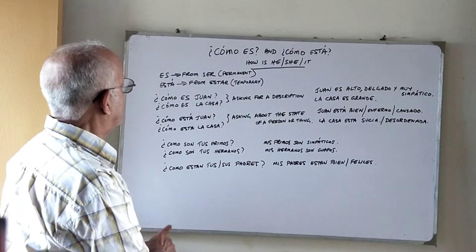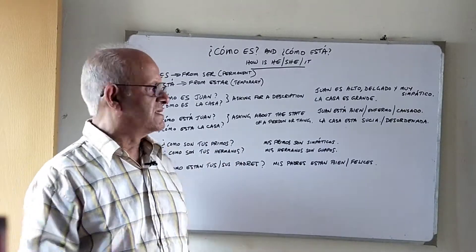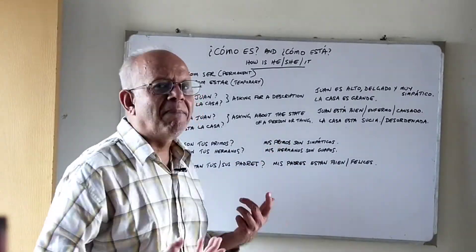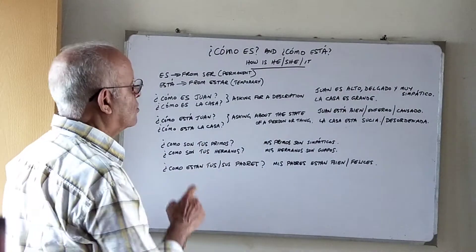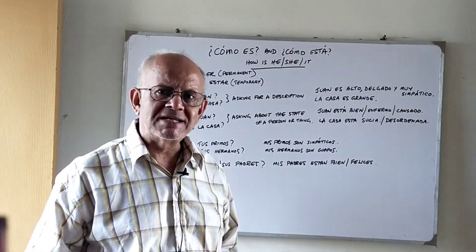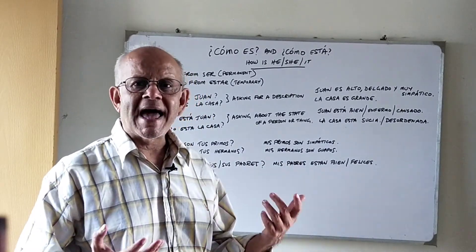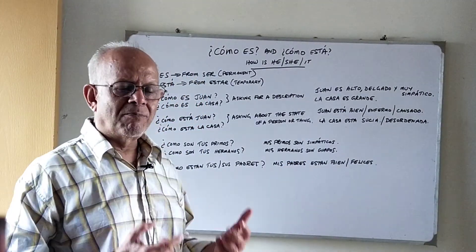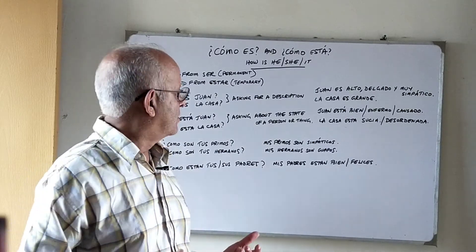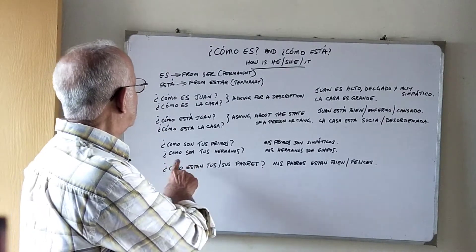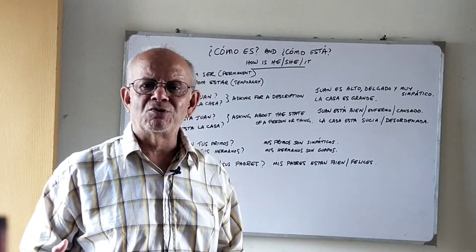Now some more examples in the plural. Cómo son tus primos? — What are your cousins like? The answer could be: Mis primos son simpáticos — my cousins are kind. Or Cómo son tus hermanos? — What are your brothers like? Mis hermanos son guapos — my brothers are handsome. Guapo is used for males; for females we use linda or bonita. So Mis hermanas son lindas or Mis hermanas son bonitas.